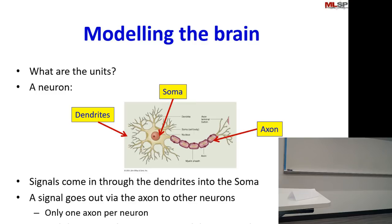So what are these units in the brain? In the brain, the individual units are neurons. Here's what a neuron looks like.